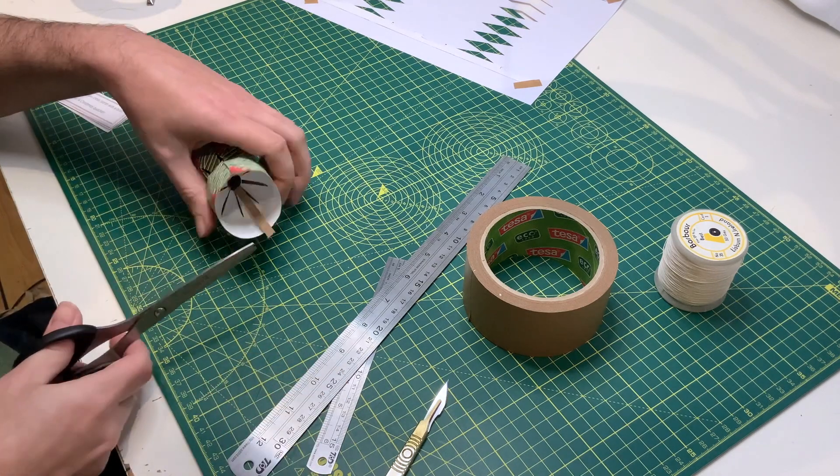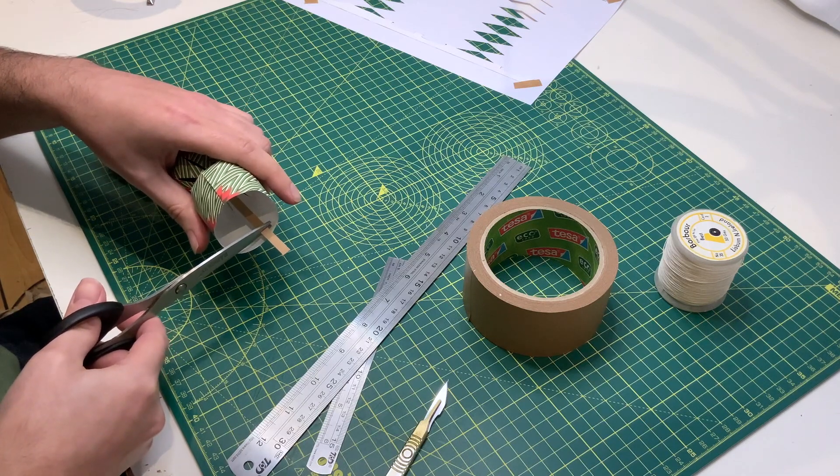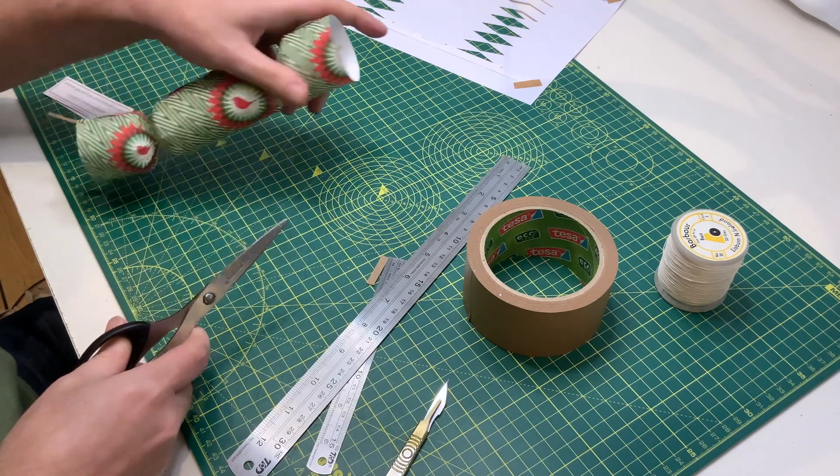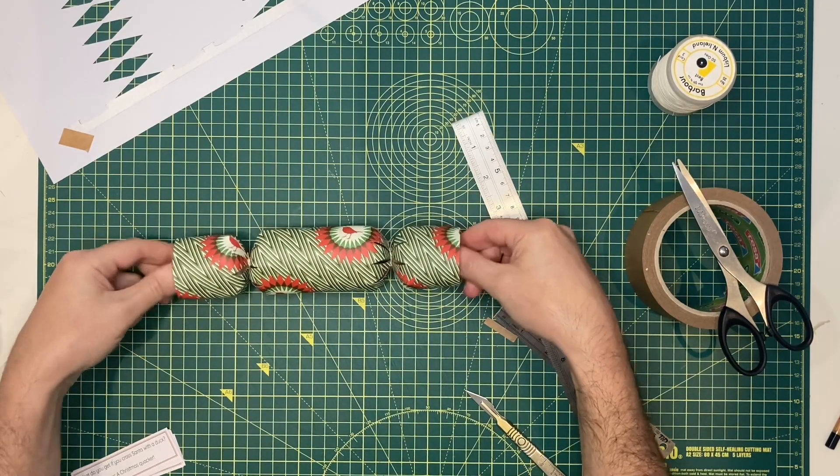And finally, trim the edges of the cracker snap so that they fit inside the cracker. You now have a finished Christmas cracker ready to display or to give as a gift.